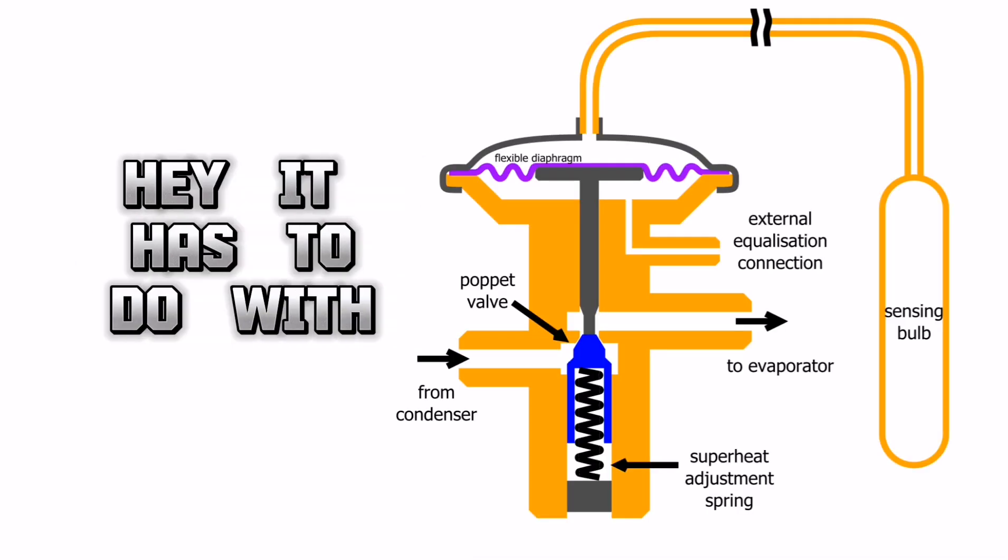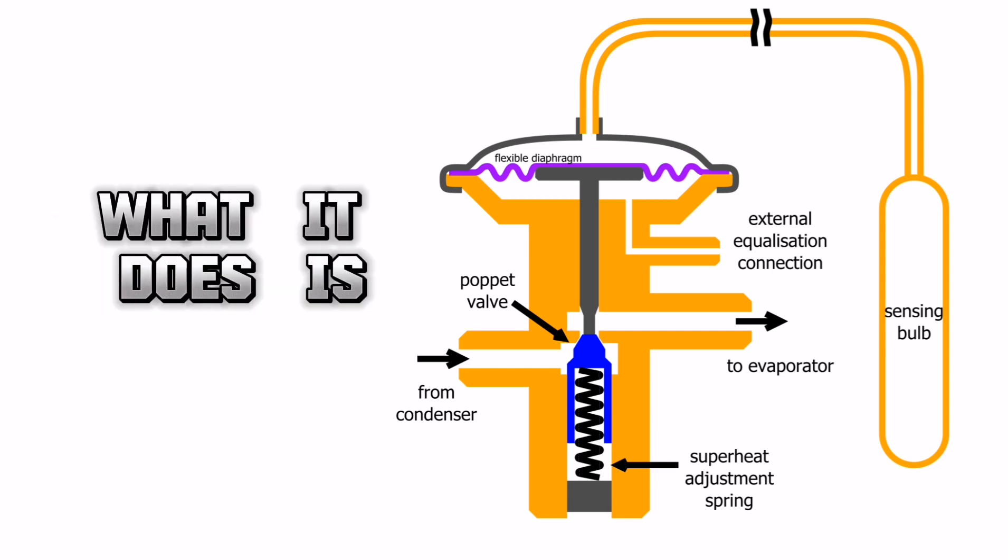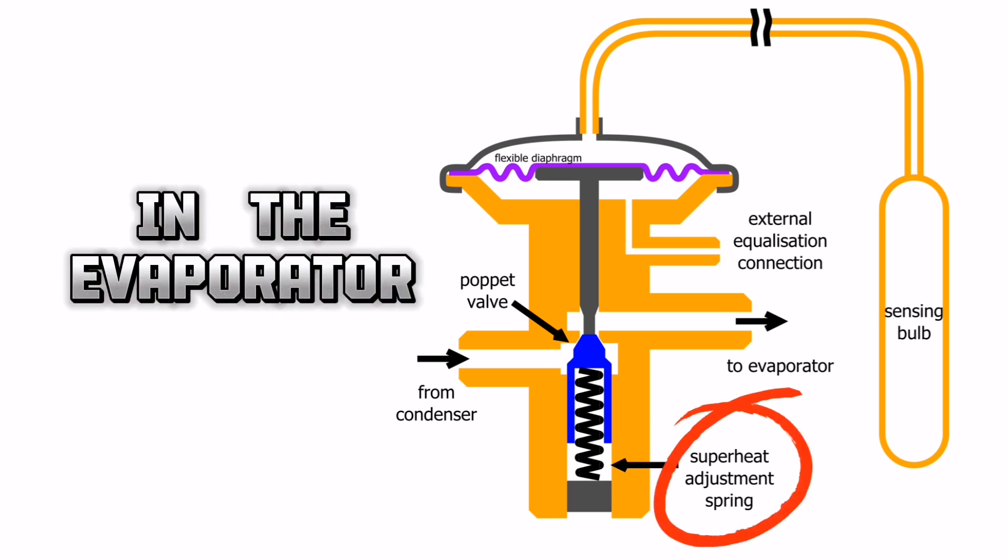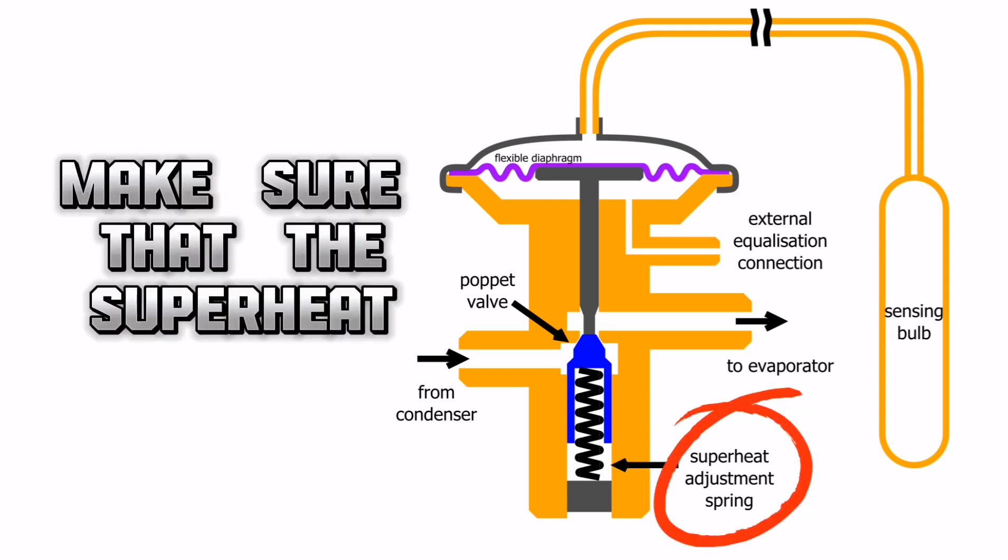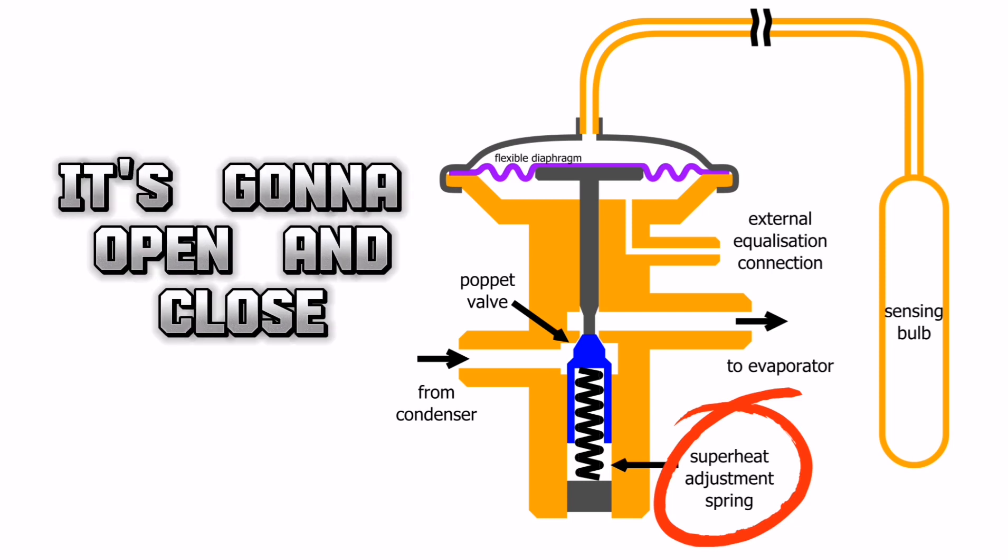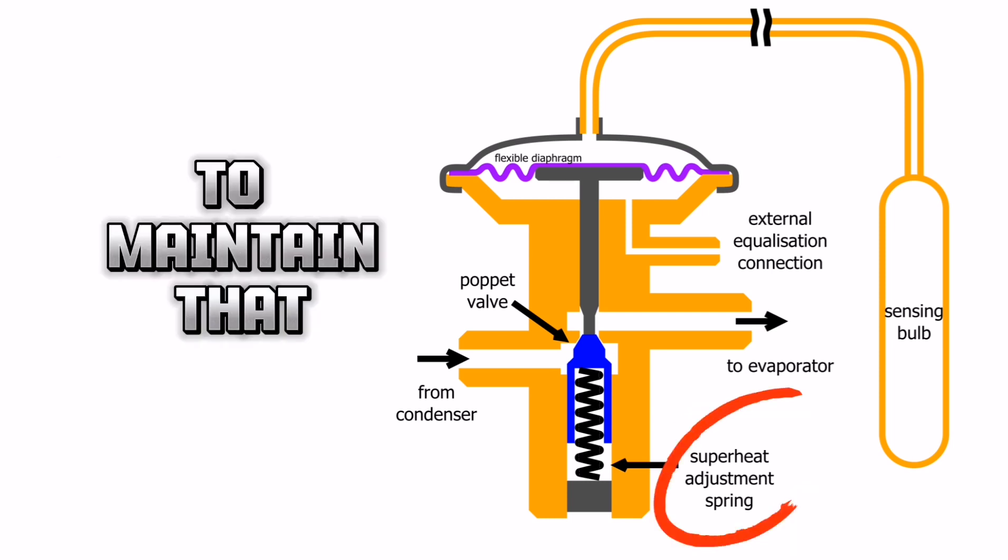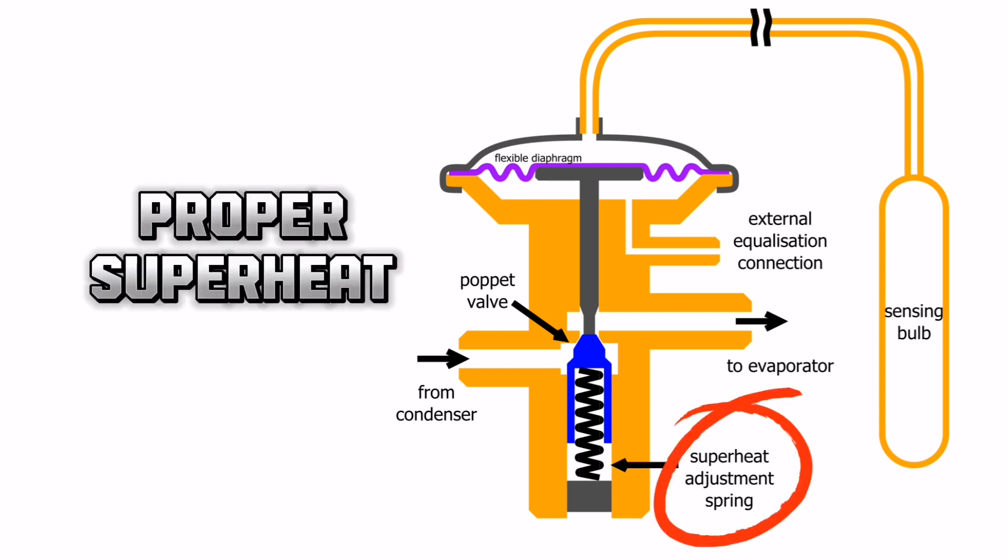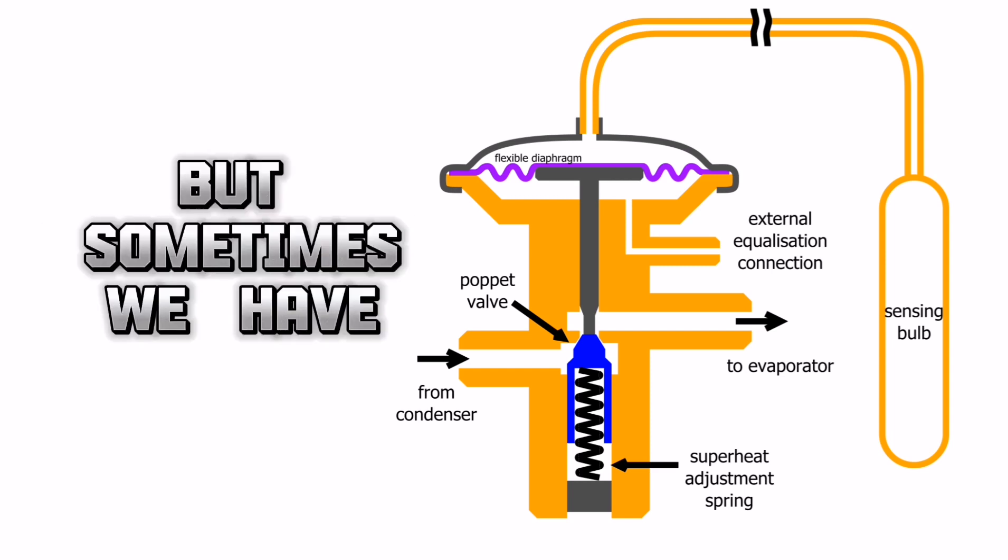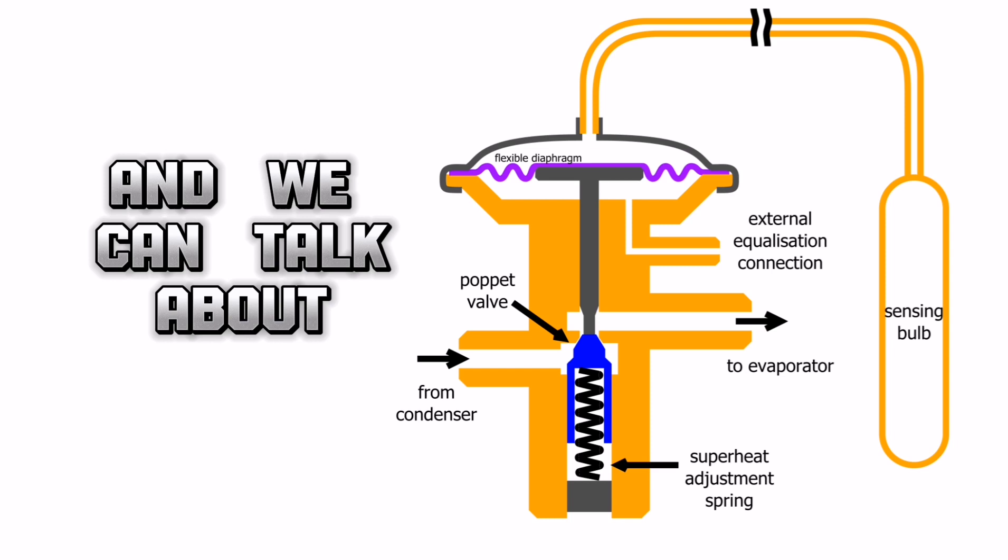We said the thermostatic expansion valve has to do with temperature. But actually what it does is it maintains superheat in the evaporator. Make sure that the superheat in the evaporator is right where it's supposed to be. And it's going to adjust. It's going to open and close to maintain that proper superheat. And usually they come preset from the manufacturer, but sometimes we have to adjust them.